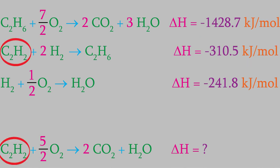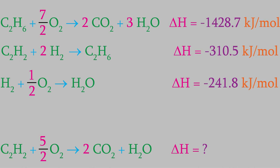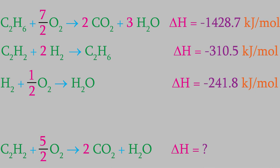We're not done yet. Acetylene is now on the correct side, but the three reactions still won't add up to the overall reaction we want. Looking at the other compounds: oxygen appears in both the first and third reactions, so let's set it aside. Carbon dioxide is a better choice — it only appears in the first reaction. We need two CO2 molecules on the right side in our overall reaction, and there are already two on the right in reaction one, so no change is needed there.